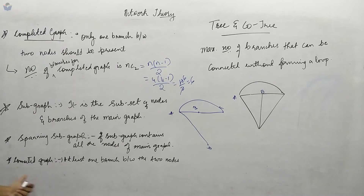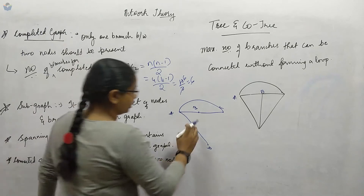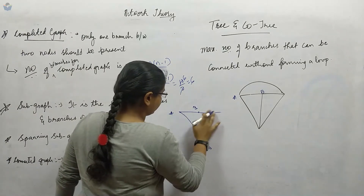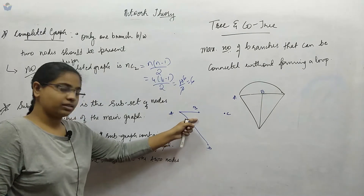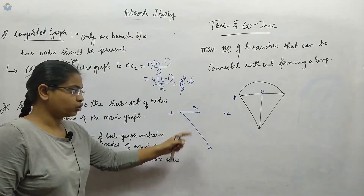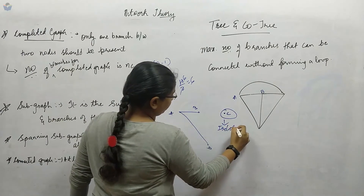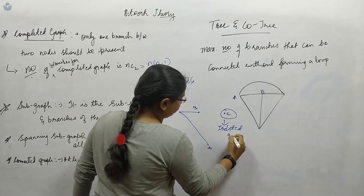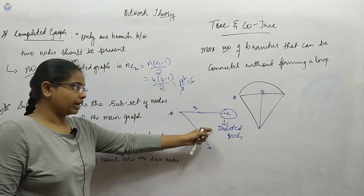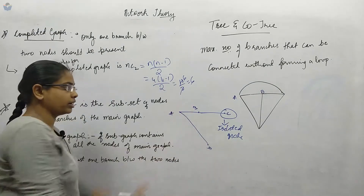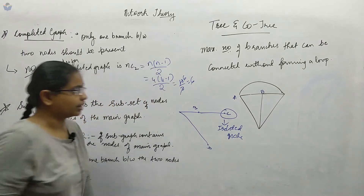Next, connected graph — at least one branch between any two nodes should be present. If node C is isolated with no branch connecting it to the others, it is a non-connected graph. If you connect it as well, it becomes a connected graph because all the nodes you have selected are connected with each other.